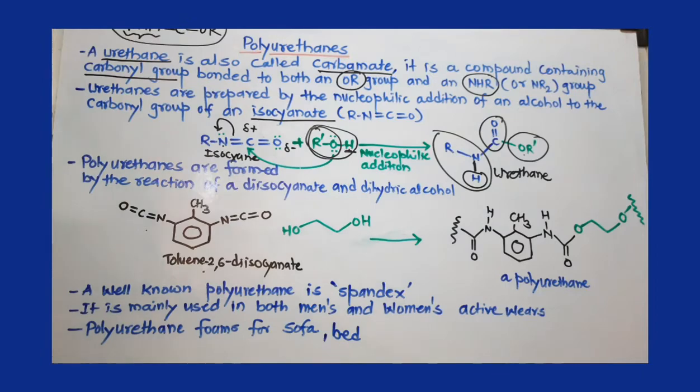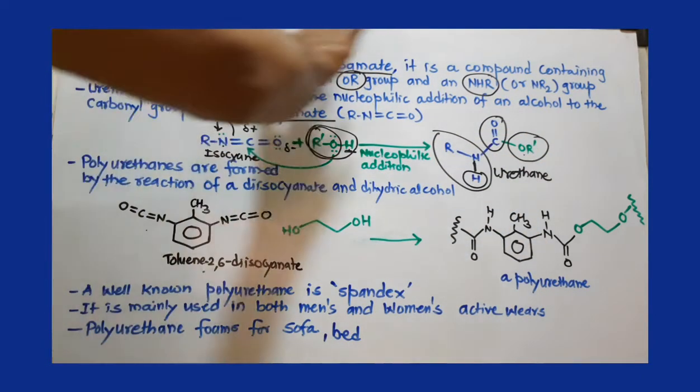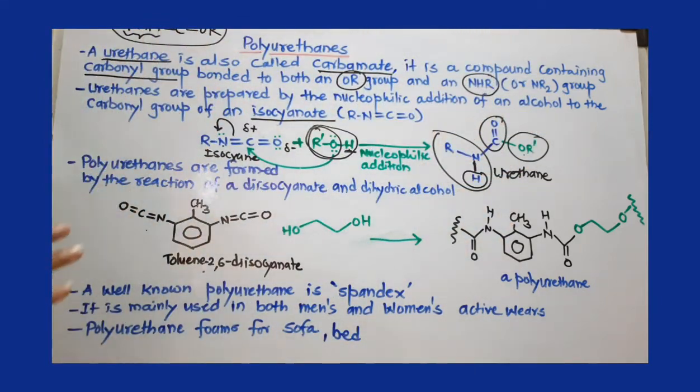In this way we get urethane where the carbonyl group has OR and NHR groups. Once this urethane is formed, we can prepare polyurethane. This is the prerequisite knowledge required to understand polyurethanes. Now, how are polyurethanes formed?